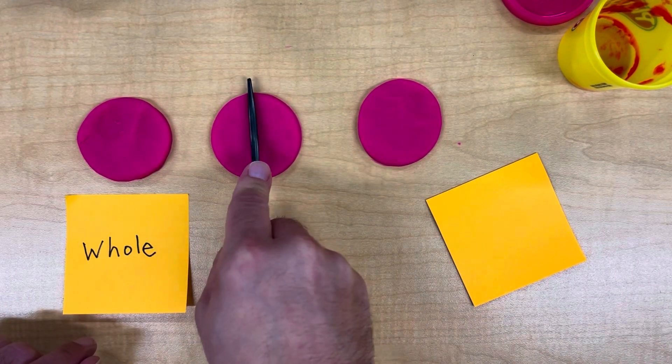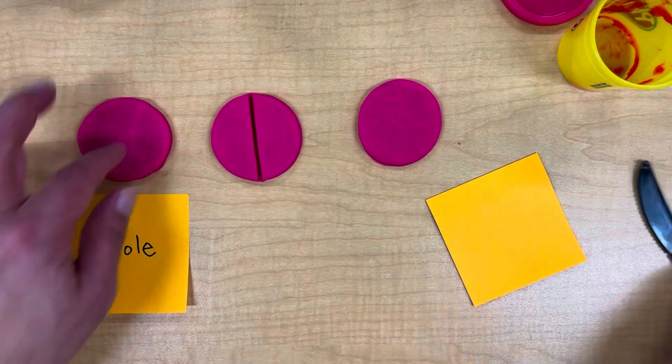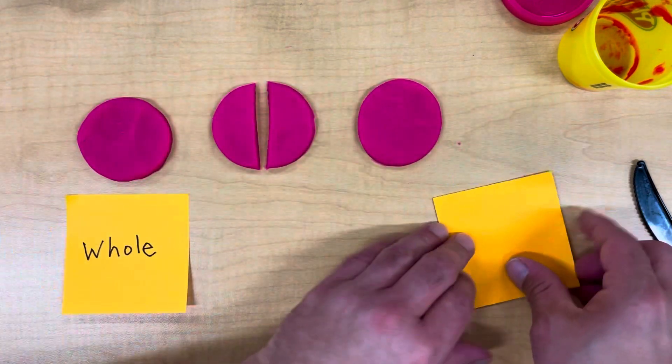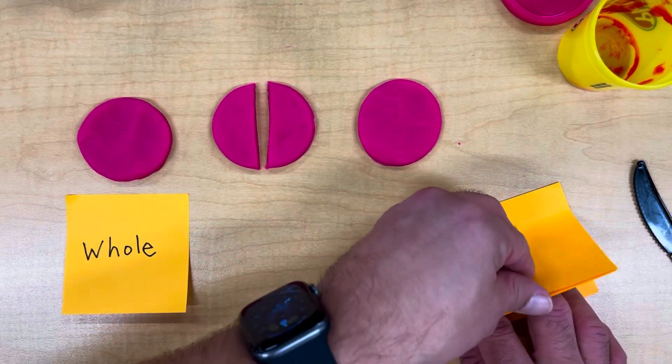Next, we're going to divide the second circle in two. This would make two halves. Let's use a post-it to label this halves.